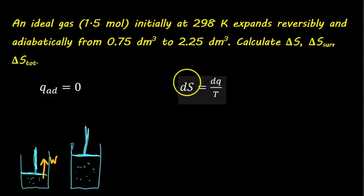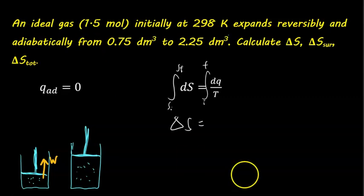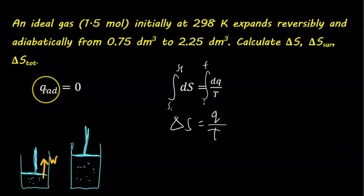Based on our thermodynamic definition of entropy, we can plug that in and get zero as well. If we integrate from some initial to some final state, this gives us the change in entropy for the system. This just becomes Q, the energy transferred as heat during the process, which is zero during an adiabatic process. So the change in entropy for the system for a reversible adiabatic process is zero.